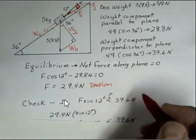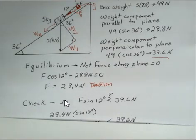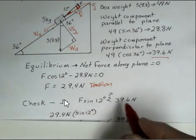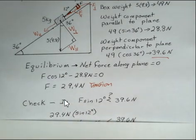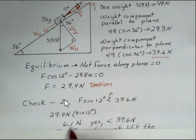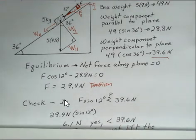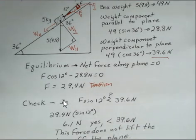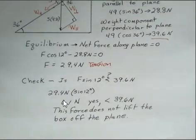Is that less than 39.6 newtons? That's the component of the weight that's going into the plane. If this was bigger than 39.6 newtons, that would say this rope is lifting the box off the plane. That's not going to be an equilibrium situation. Well, 29.4 sine of 12 degrees, that component of the tension of the rope perpendicular to the ramp, is 6.1 newtons. That's okay.